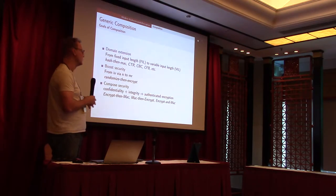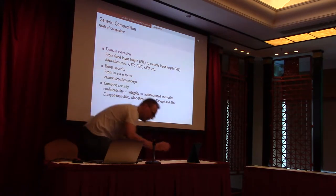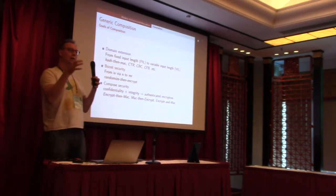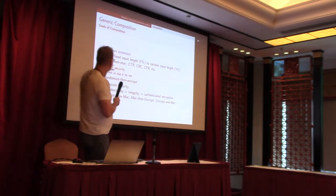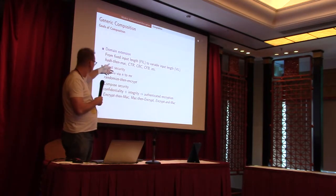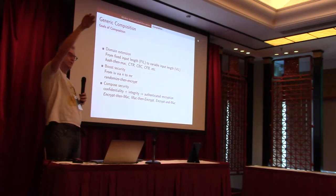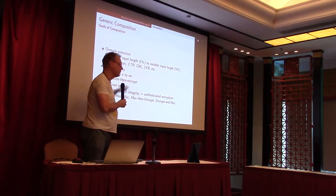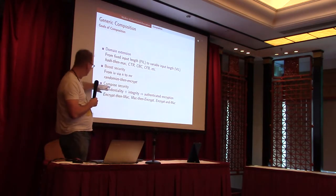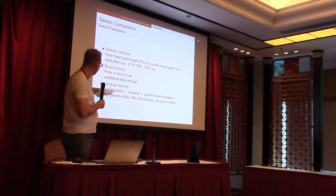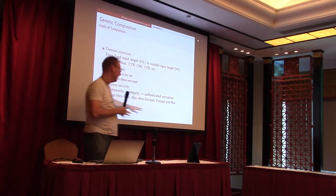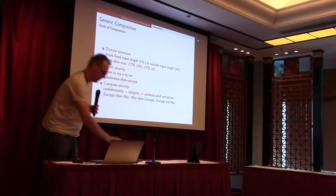This is where generic composition comes into place. There are three different types of goals to consider. First, domain extension: you have a PRF or PRP that takes a fixed input, but you want variable input length — CBC or CFB does this. Second, boosting security: going from the weakest level of IV-based security to the strongest notion where you can reuse nonces — randomize-then-encrypt achieves this. And finally, compositional security: combining confidentiality and integrity — encrypt-then-MAC, MAC-then-encrypt — to achieve authenticated encryption.